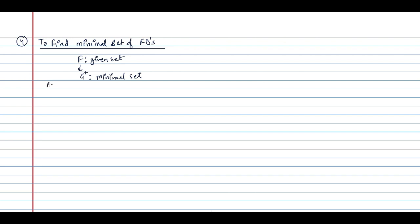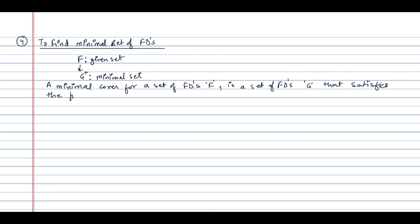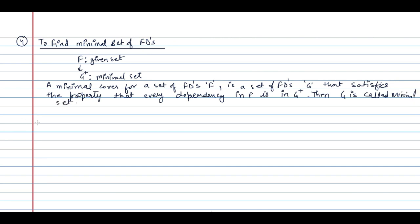A minimal cover for a set of functional dependencies F is a set of functional dependencies G that satisfies the property that every dependency in F is in G-closure. Then G is called the minimal set.